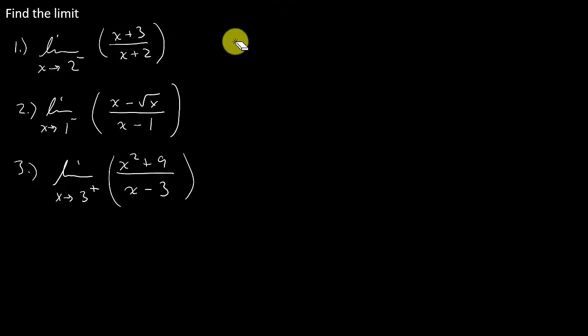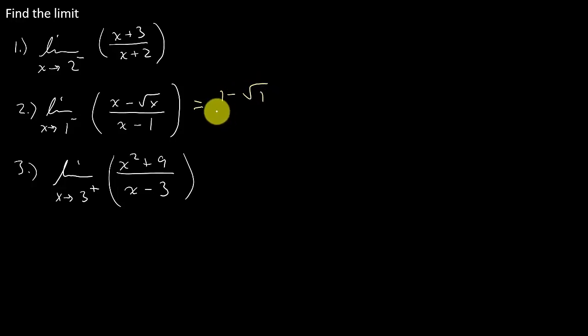We've got the limit of (x minus the square root of x) over (x minus 1) as x approaches 1 from the left. Let's plug the 1 in. I get 1 minus the square root of 1 over 1 minus 1, and that gives me 0 over 0. So that's an indeterminate form. When we get 0 over 0, we need to try something else.